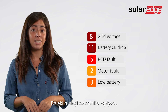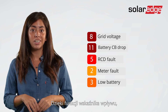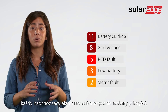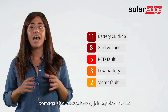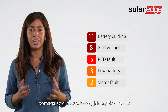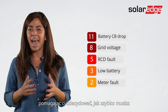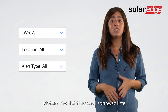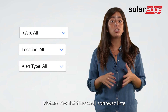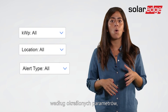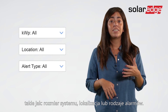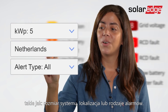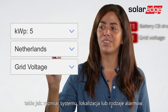Thanks to the impact indicator feature, each incoming alert is automatically prioritized, helping you to decide how quickly you must actually deal with each alert. You can also filter and sort the list according to specific parameters such as system size, location, or types of alerts.